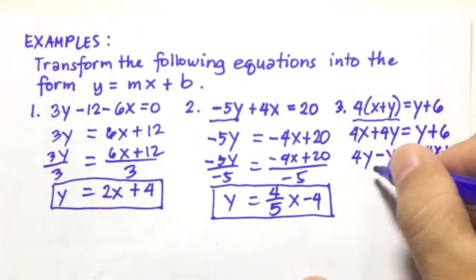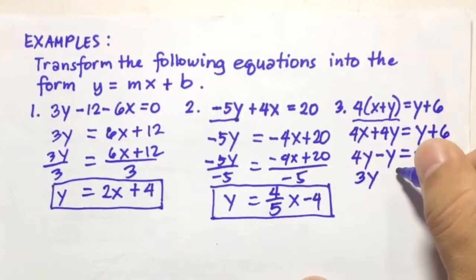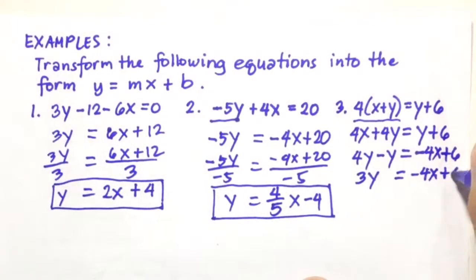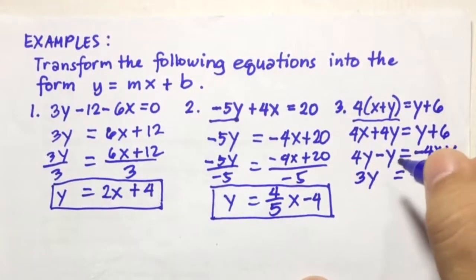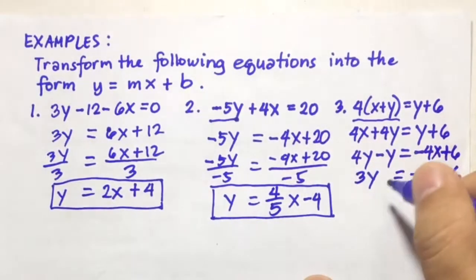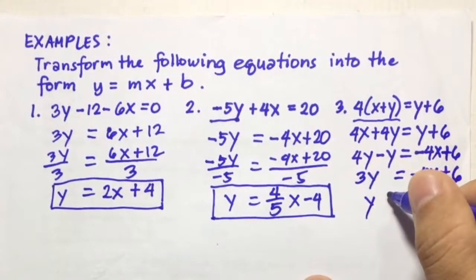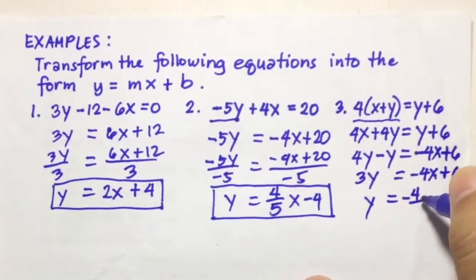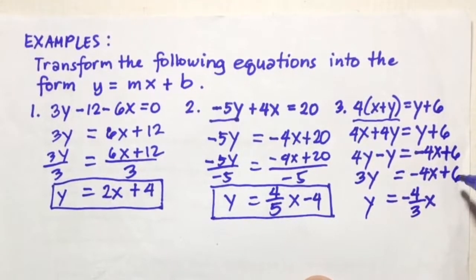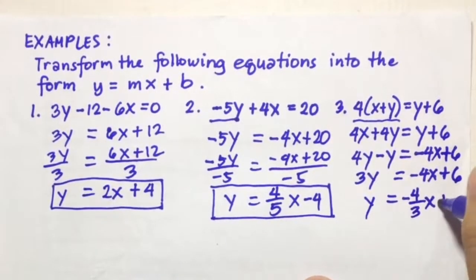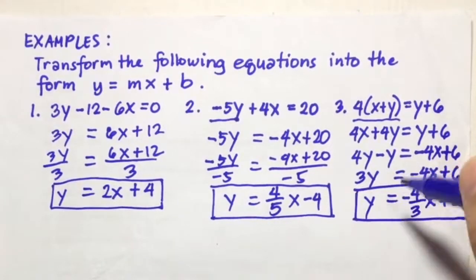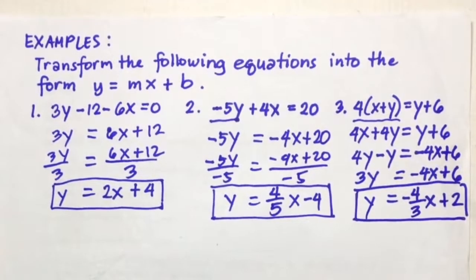4Y minus Y is 3Y, which equals negative 4X plus 6. Dividing both sides by 3: 3Y divided by 3 is Y, and negative 4X divided by 3 is negative 4 over 3 X, and 6 divided by 3 is 2. So the answer for number 3 is Y equals negative 4 over 3 X plus 2.